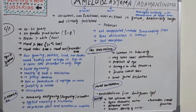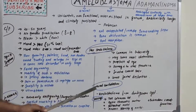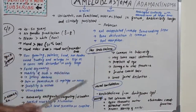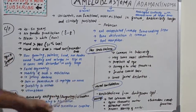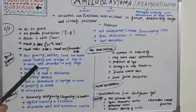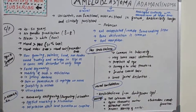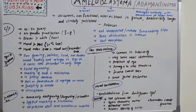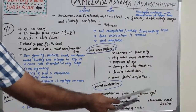In the case of maxilla, it commonly affects the tuberosity, causes nasal obstruction, proptosis of the eye, damage to vital structures, and involves the cranial base, leading to gross facial distortion. Mural ameloblastoma refers to ameloblastoma arising from a dentigerous cyst.